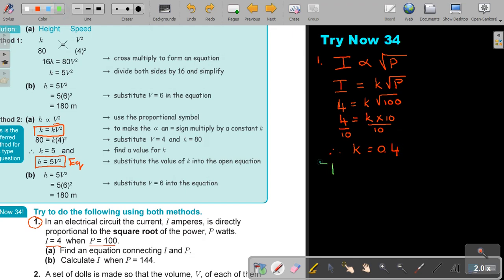And now, so this is, find an equation. That's my equation. And in number B, use the equation. Calculate I when P is 144. So first write down your equation. And then, in the place of P, put 144. And that will give me 0.4 times 12. And that will give me a final answer of 4.8 amperes. And that's easy as that. So first always find your equation. And then, after that, just use your equation.